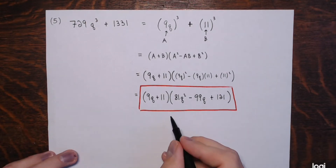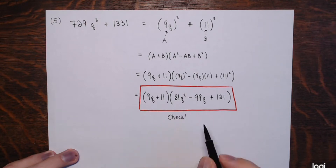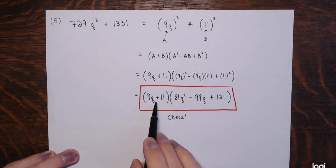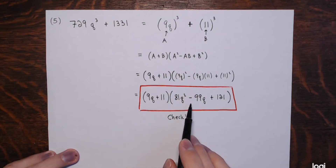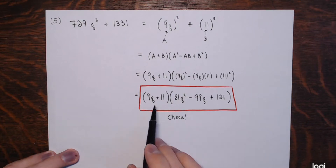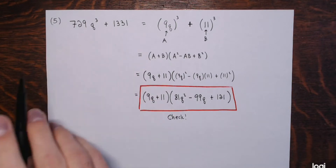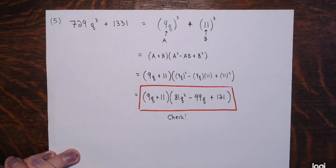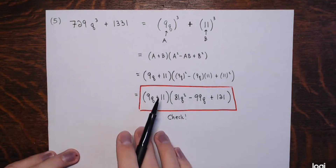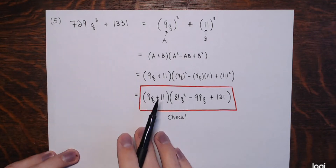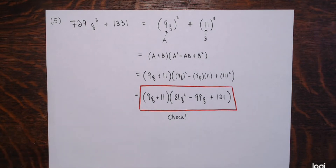Don't forget to please check your work. Multiply these — distribute the 9q, distribute the 11, combine like terms — and you would end up with the original expression. Also, these two expressions should take on the same value no matter what you plug in for q, but I leave all that to you.